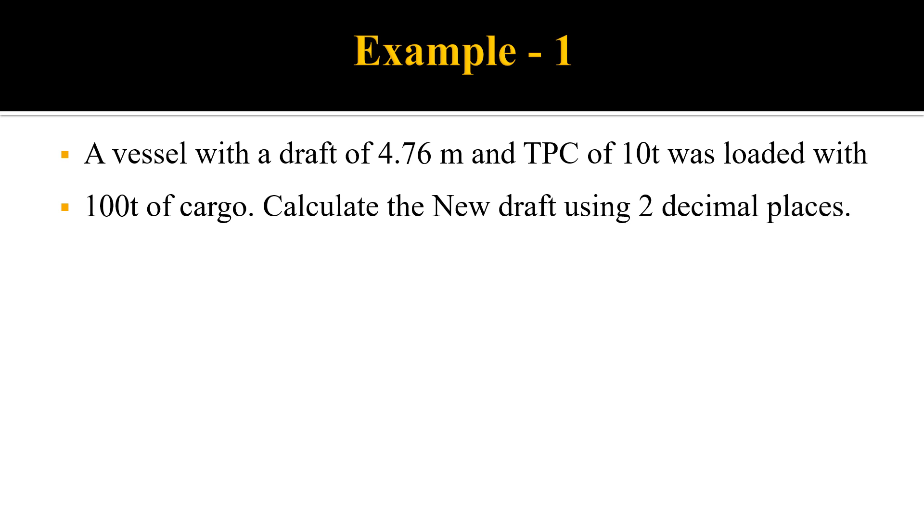Now, let us look at an example. A vessel with a draft of 4.76 meters and TPC of 10 tonnes was loaded with 100 tonnes of cargo. Calculate the new draft using two decimal places.